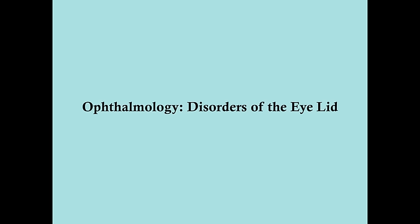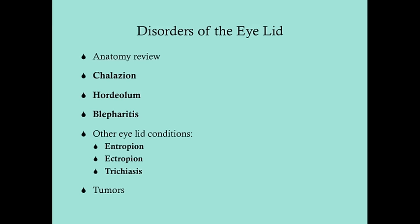We'll approach some disorders of the eyelid here. I want to do a quick overview of the anatomy just to orient ourselves. We'll talk about the three inflammatory disorders: two focal inflammatory disorders known as chalazion and hordeolum, and then a more diffuse inflammatory disorder called blepharitis, which has many causes. And then some other eyelid conditions: the entropion, ectropion, and trichiasis.